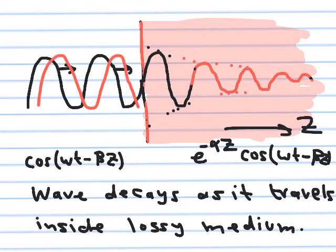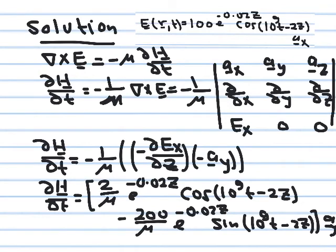In the air portion it's just cosine(ωt minus βz) — a regular traveling wave. But once the wave enters the lossy medium on the right, it begins to decay. This is a very well-known phenomenon that you will hear about more in advanced courses. Now we move to calculate the magnetic field.